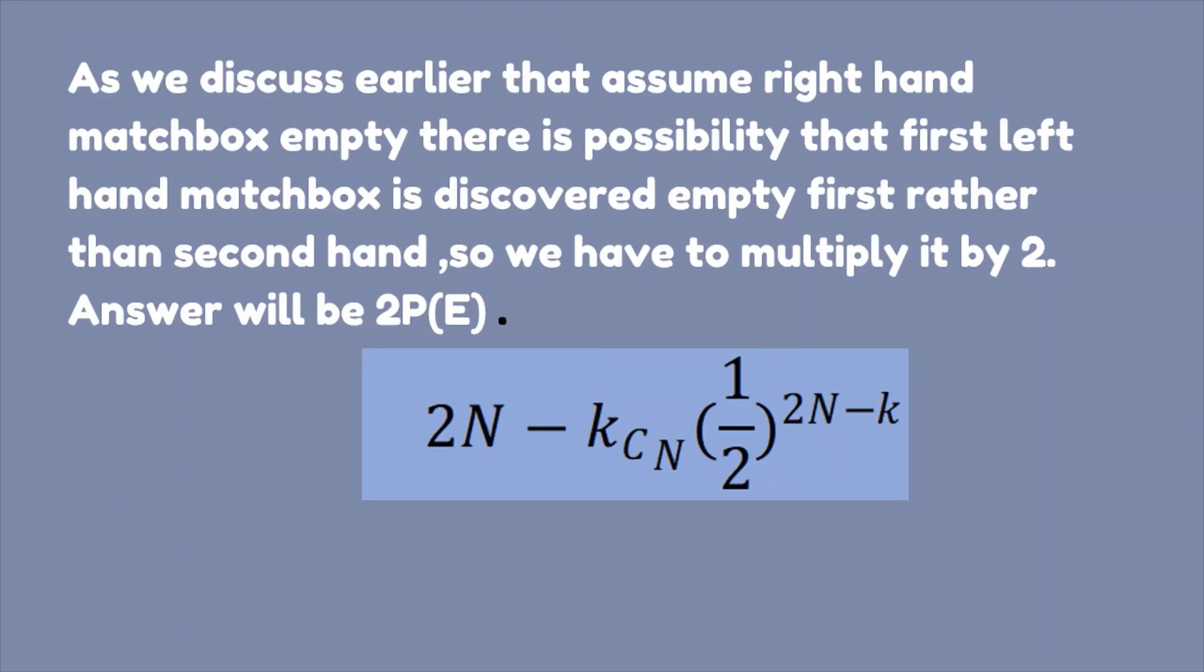As we discovered earlier that our assume right hand matchbox empty. So there is possibility that the first left hand matchbox is also discovered empty first rather than second. So we have to multiply it by 2. So our answer will be 2 times probability of that event to occur. So answer will be 2N minus k choose N, half to the power 2N minus k.